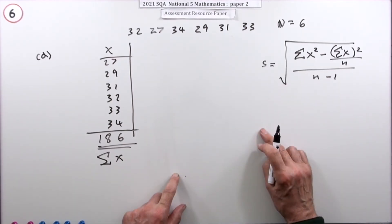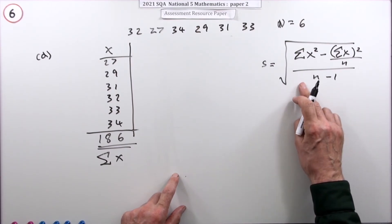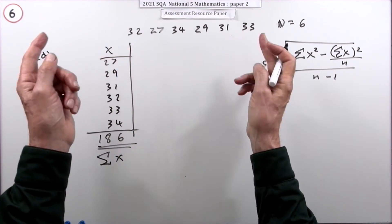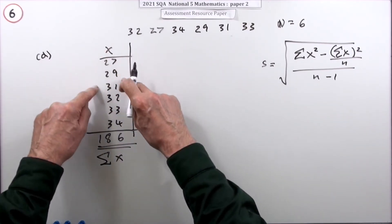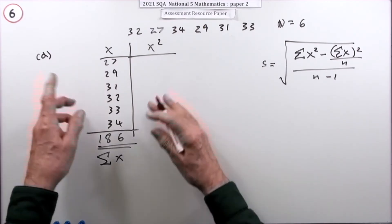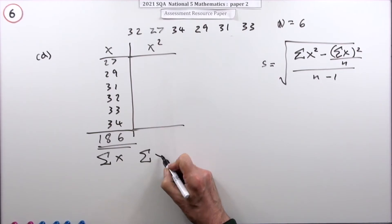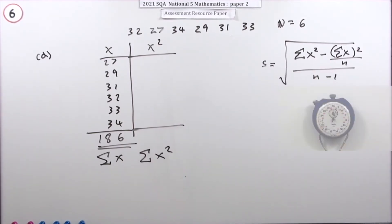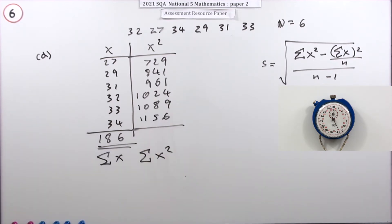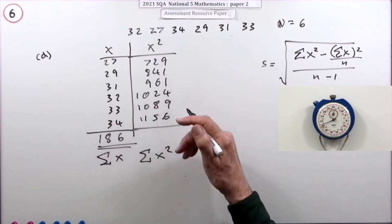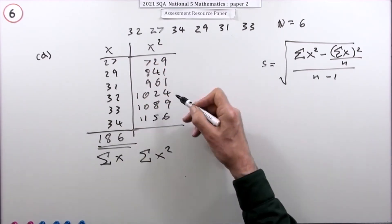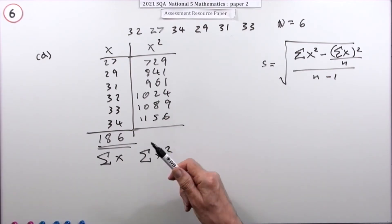If you'd used the other formula it would take much longer, and you shouldn't unless forced into it by a nasty decimal mean - because squaring the differences when they're decimals is just as painful as squaring all the original x values and adding them up.